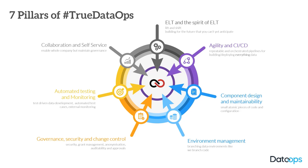To achieve the real value of DataOps, we have to move to a world where the source of truth is defined in source systems and in a code repository, and the data lake or data warehouse is the engine on which that is deployed. It's deployed repeatedly, regularly, in different branches, and the data warehouse becomes essentially an engine — a very clever engine — that executes the source of truth, not the source of truth itself.